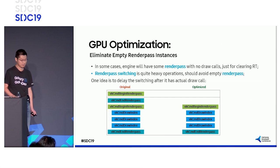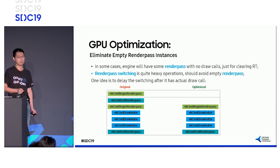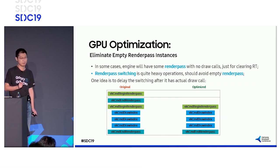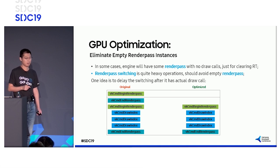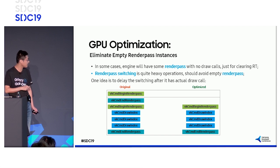Now let's look at render pass optimizations. First, remove empty render passes — a render pass without any draw calls. This may happen when some engines trigger a clear command. Since render pass switching is a heavy operation, we should remove all empty render passes. Our suggestion is to delay starting a render pass, and if no draw call comes and the render target is not changed, never start a new render pass. This eliminates all empty render passes.